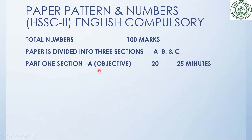Section A is the objective part, also called MCQs. This objective part contains 20 marks and the time allowed is 25 minutes. The MCQs are a mixture of grammar, lessons, poems, and plays — the whole book. Four choices will be given and you have to choose one correct answer.